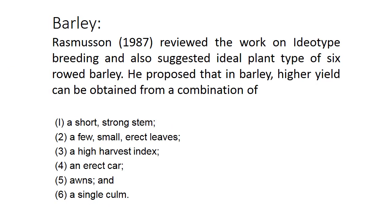For barley, Rasmussen in 1987 reviewed idiotype breeding work and suggested an idiotype for six-row barley. He proposed that higher yield in barley can be obtained from a combination of characters like short strong stem, few small erect leaves, high harvest index, erect awns, and single culm.